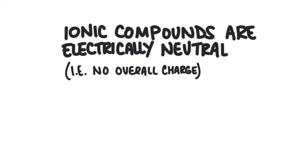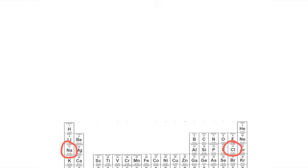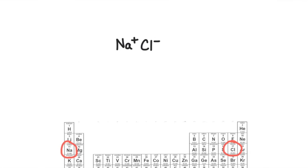Let's see how this works. Sodium forms a cation with a +1 charge, and chlorine forms an anion with a −1 charge. When these two ions meet, they naturally balance each other out since their charges are the same magnitude. So one sodium and one chloride ion will stick together to form the compound NaCl, sodium chloride.